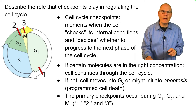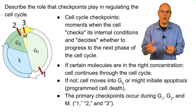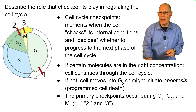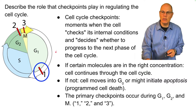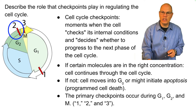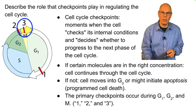The primary checkpoints to know about for AP Bio are the G1 checkpoint, the G2 checkpoint, and the M checkpoint.